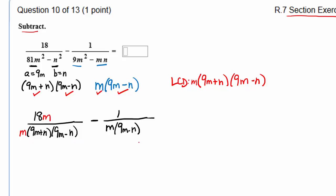And what about over here on the right? Yes, we're missing the 9m plus n, so we're going to multiply by that. And now we have two fractions with common denominators. That's all downhill from here.